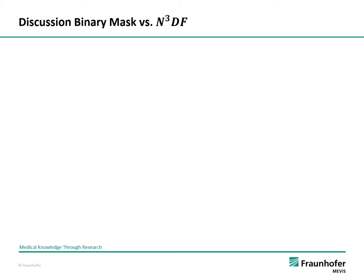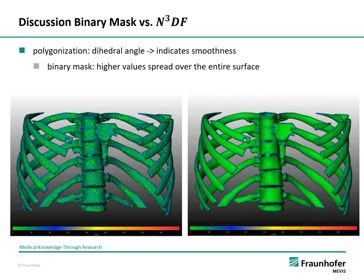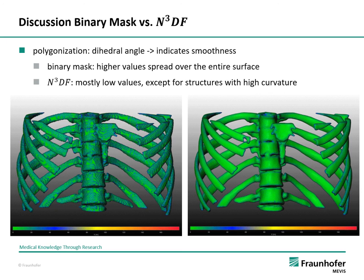We now compare the polygonization of the binary mask and of the N3DF, again using the ribcage as an example. To judge smoothness in an objective manner, we compare the curvature of both surfaces by calculating the dihedral angle of the polygon mesh and visualizing it on the surface. Small values shown in green indicate less curvature, while higher values shown in blue correspond to higher curvature. On the surface on the left, reconstructed from the binary mask, higher values are spread over the entire surface. Whereas the surface on the right, reconstructed from the N3DF, has mostly low values except for structures with inherently high curvature like the end of a rib. This proves that the N3DF improves the smoothness of the reconstructed surface.